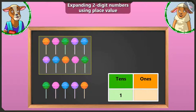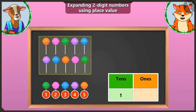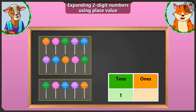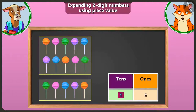Now tell me, Billy — besides the group of ten here, how many lollipops are left with which a group of ten cannot be made? Now see, there are one, two, three, four, and five lollipops left with which a group of ten cannot be made. Yes, you are right, Billy. We will write the remaining five lollipops in the box of ones. Now tell me — one ten and five ones, what is the number that we have? One ten and five ones make the number fifteen.